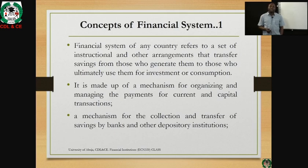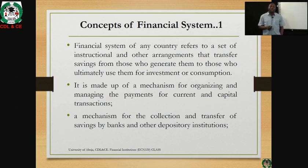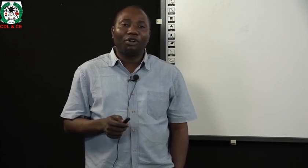Starting from the concept of financial institutions: the financial institution of any country refers to a set of institutional and other arrangements that transfer savings from those who generate them — that is, the lender — to those who ultimately use them for investment or consumption. The financial system is essentially the give and take between the lender and the borrower. Lenders are those whose current consumption is less than their current income, and the excess income not consumed is put into savings.